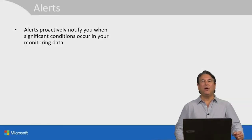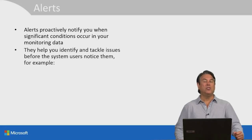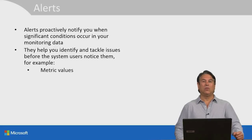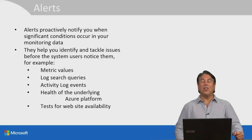Alerts proactively notify you when significant conditions occur in your monitoring data. They can help you identify and tackle issues before the system users notice them. For example: metric values, log search queries, activity log events, health of the underlying Azure platform, and testing for website availability. Let's go to the lightboard and see how alerts actually work.